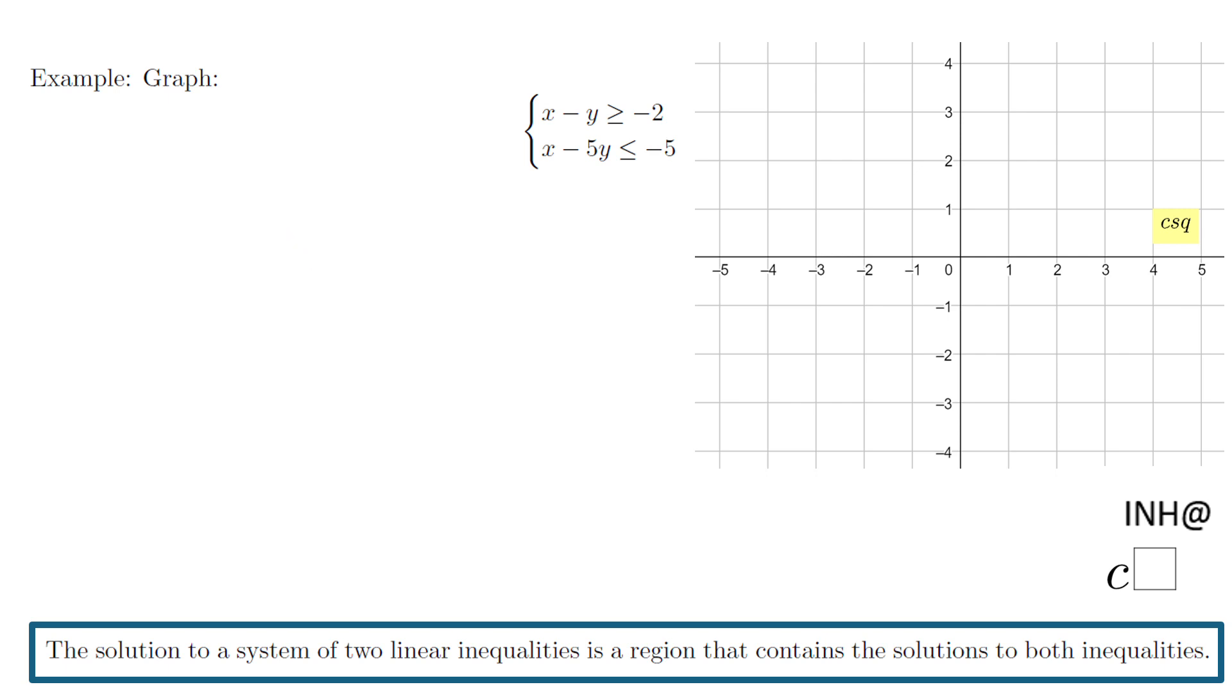Welcome or welcome back to I Need Help at C Squared. In this example, we're going to graph these two inequalities. We're going to solve this system of inequalities, and we're going to use this grid here because the solution to a system of two linear inequalities is the region that contains the solution to both inequalities.